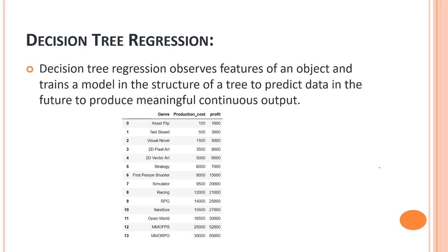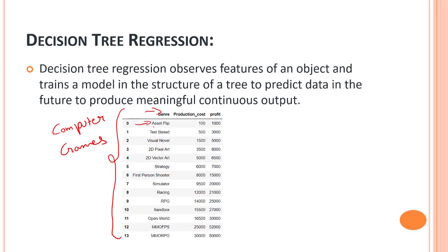Let's look at our dataset, which is a real-life practical example. This is the dataset we are going to use in our lab sections. It belongs to computer games. The dataset has the genre of the game — for example, asset flip — the production cost, say 100, and the profit, say 1000 rupees. For a visual novel, the production cost is 1500 and the profit is 5000.